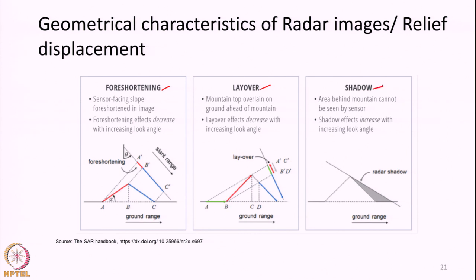What exactly is foreshortening? Let us say we have a mountain or hill. The radar system is somewhere here. The ground point at the base facing the radar is A, the ground point at the other base is C, and the top of the hill is labeled B double-dash. The slope AB double-dash is the same length as B double-dash C, and the horizontal distance AB equals BC. It is a symmetrical hill.